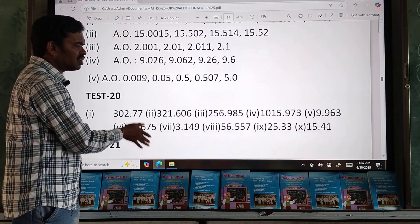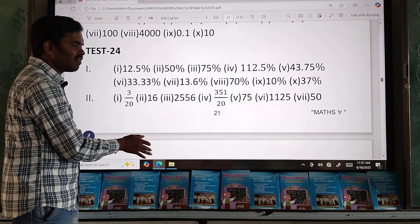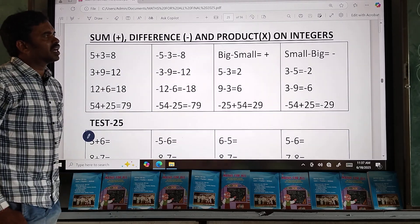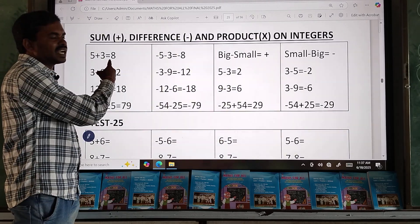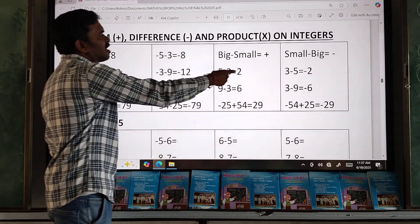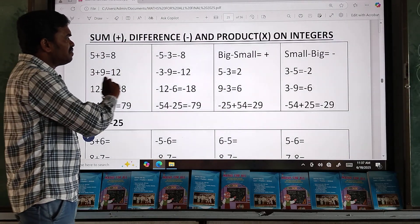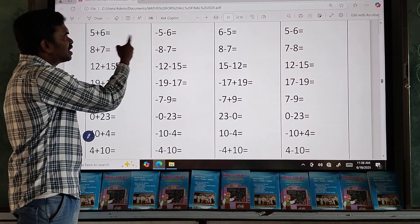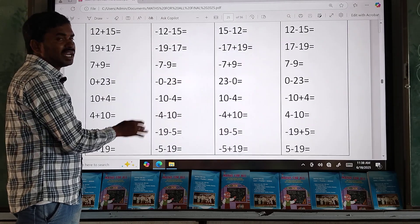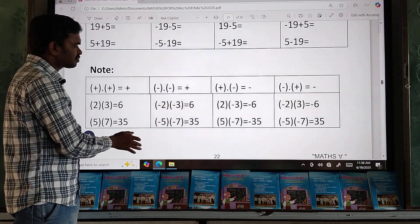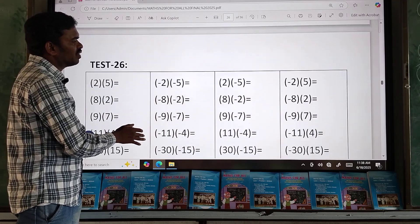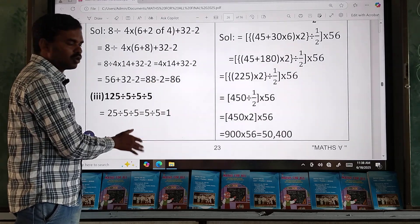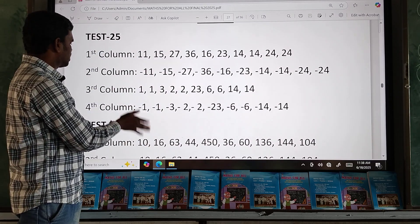In this book, every concept is clearly explained and on every concept, questions are also given to you for your practice purpose. Now, sum, difference, and product of integers. Plus 5 plus 3, how much? Minus 5 minus 3, how much? 5 minus 3, how much? 3 minus 5, how much? I have given explanation and worksheet is also given. You can learn in the above and you can do this page. Next, BODMAS, questions on BODMAS.